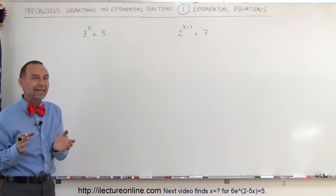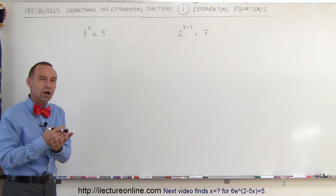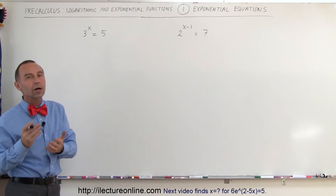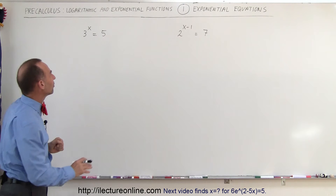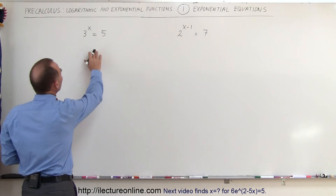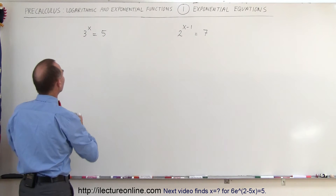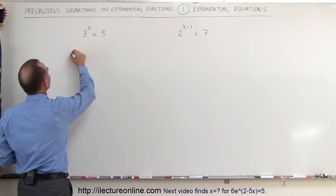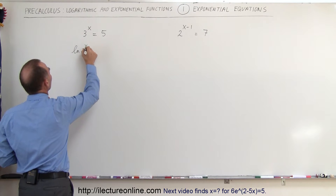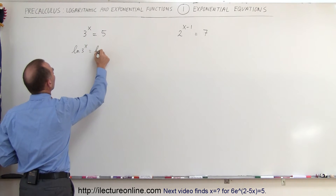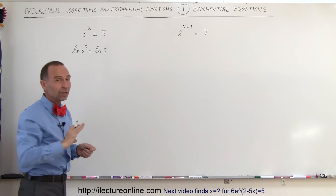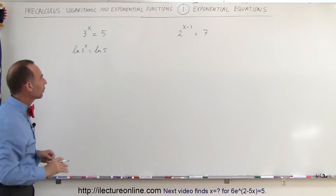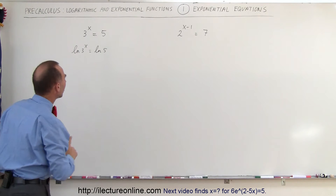Well the best thing to do is to take either the natural log or the log of both sides. So let's do it both ways. Here on the left side we're going to take the natural log of both sides. So if we take the natural log of 3 to the x, that should equal the natural log of 5. Since we do the same thing to both sides of the equation, nothing really changes.